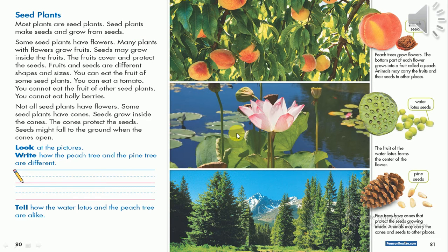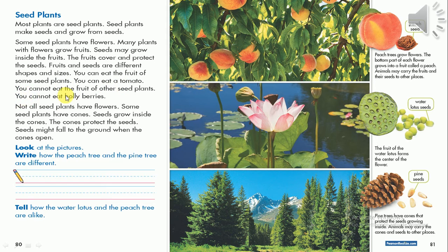Some seed plants have flowers. Many plants with flowers grow fruits, like peach trees and water lotus. The fruits cover and protect the seeds. Fruits and seeds are different shapes and sizes — like lemon, orange, peaches, and watermelon, which have different shapes and sizes. You can eat the fruit of some seed plants, like tomato, apple, and banana. But you can't eat the fruits of other seed plants, like holy paris, because it's poisonous.